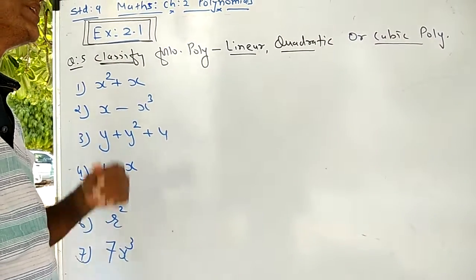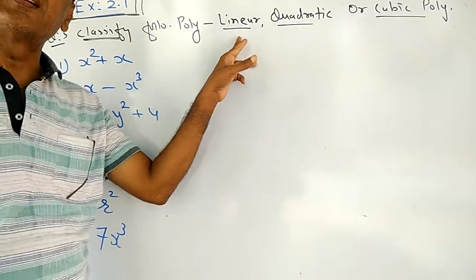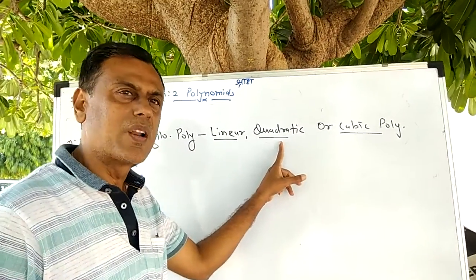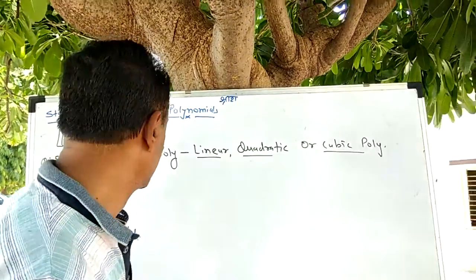We have already defined what is called linear polynomial. The polynomial having degree 1 is called as linear. Degree 2 means quadratic and degree 3 is called as cubic polynomial.